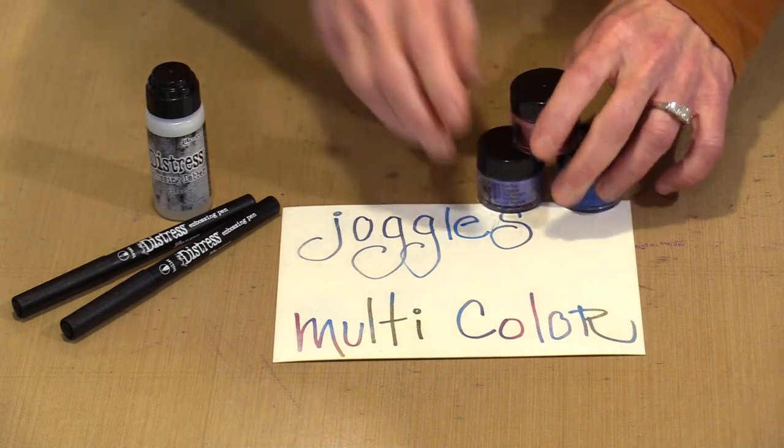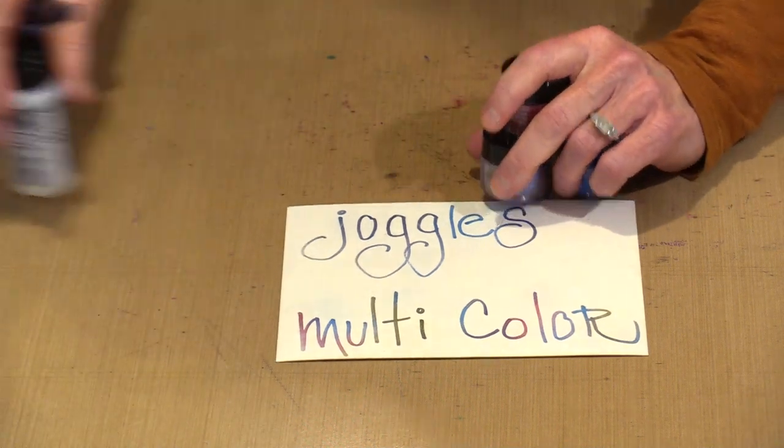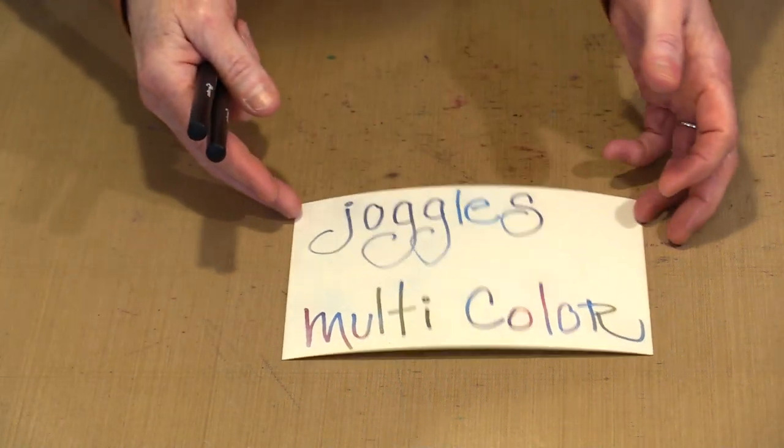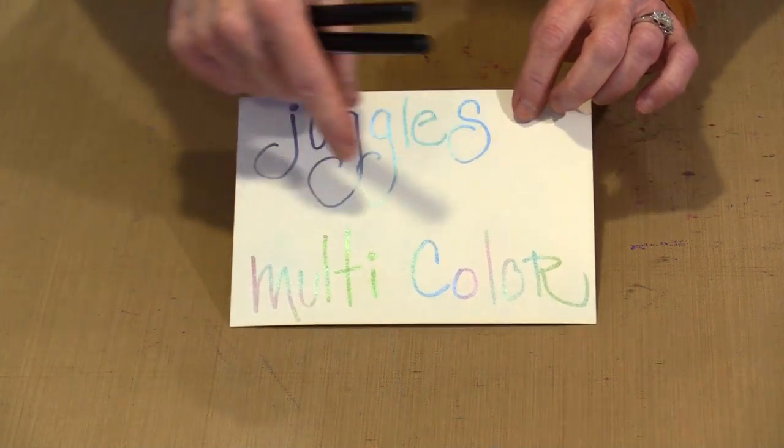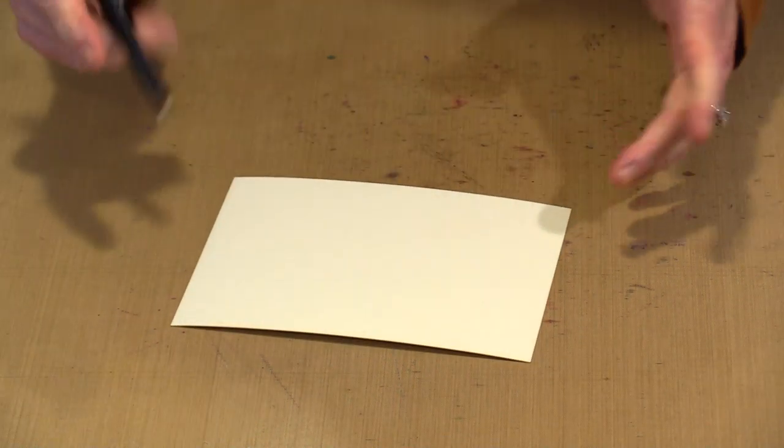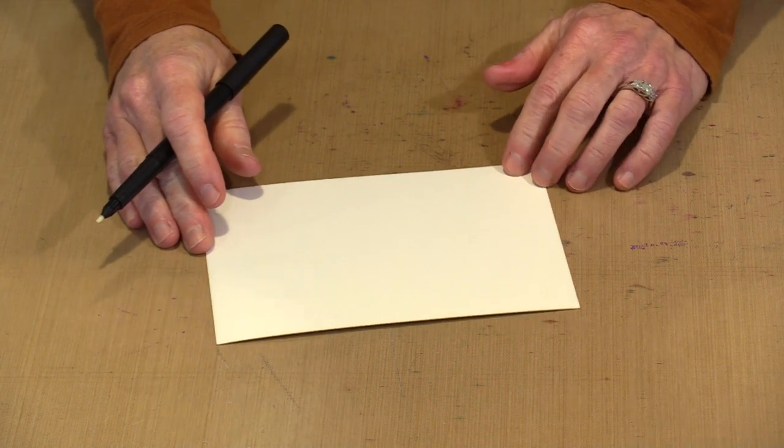So the pens are available in a bullet and a brush tip. And I'm going to use the bullet tip just for now today just to make things easy. And as you can see, you can mix your colors. Nothing says that you have to just use a single one. So here is a piece. Here is the bullet pen. This is a piece of our white smooth and sturdy cardstock.